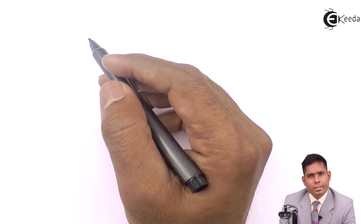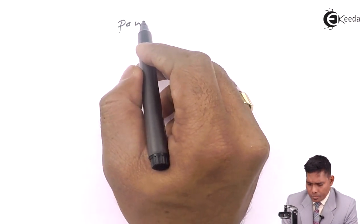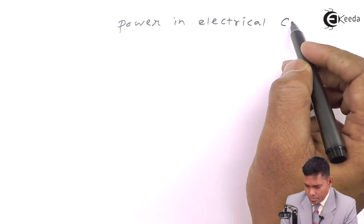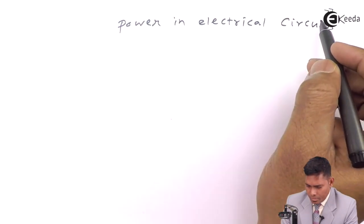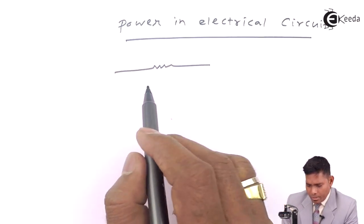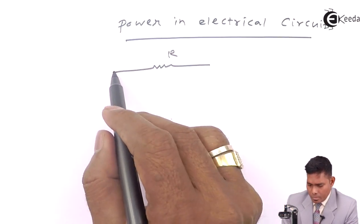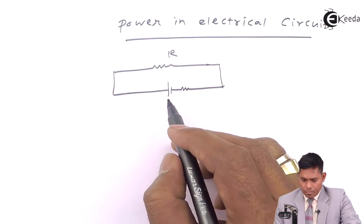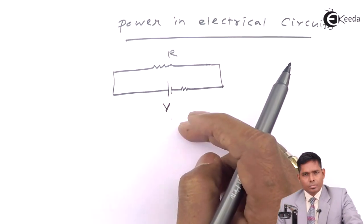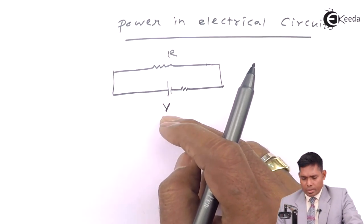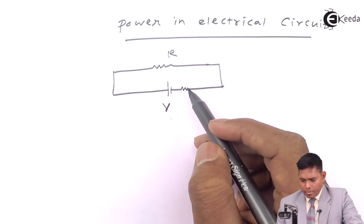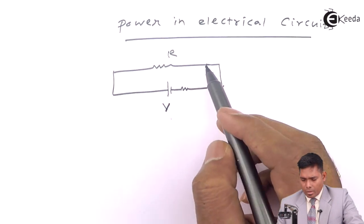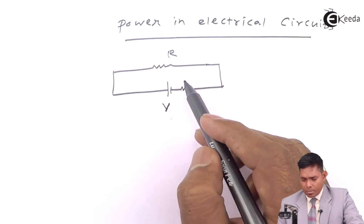Today we will discuss power in electrical circuits. There is a resistance here. Let V be the battery voltage. This might be its internal resistance or maybe any other resistance. And this is the external resistance and this is the internal resistance.